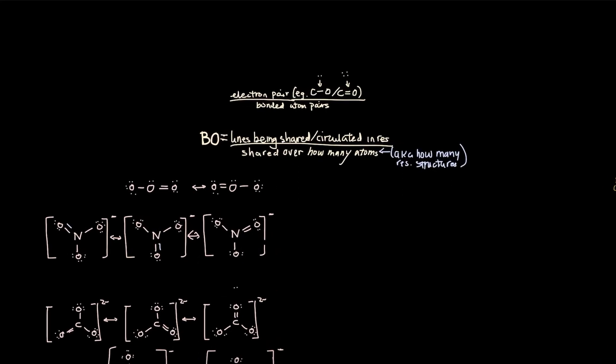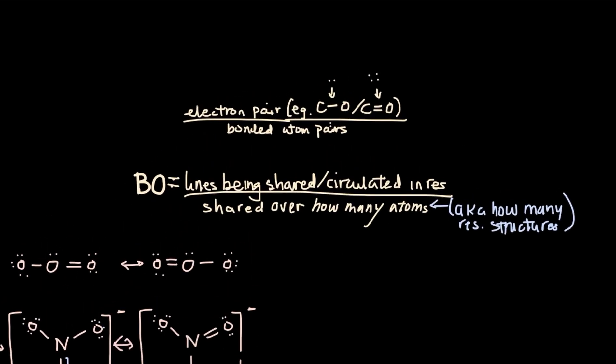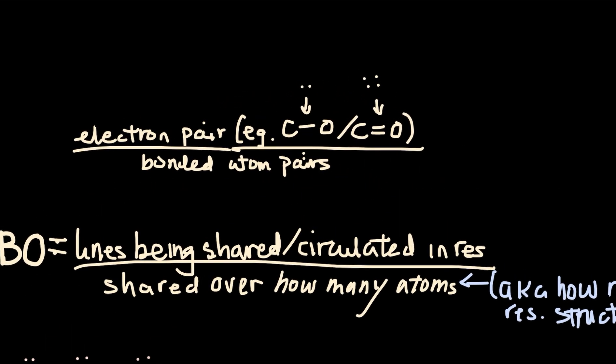How to determine the bond order for resonance structures. So bond order, we know that if it's a single bond, it's a one bond order. If it's a double bond, it's a two bond order.